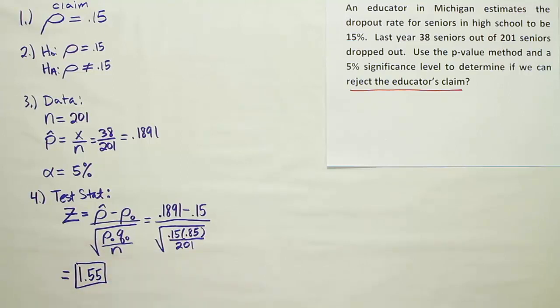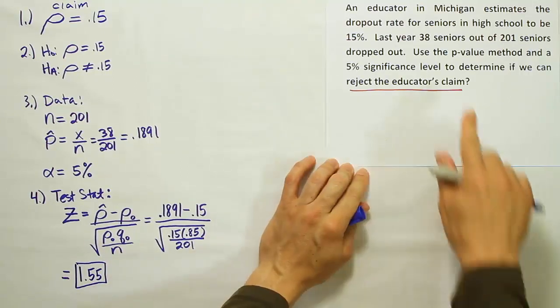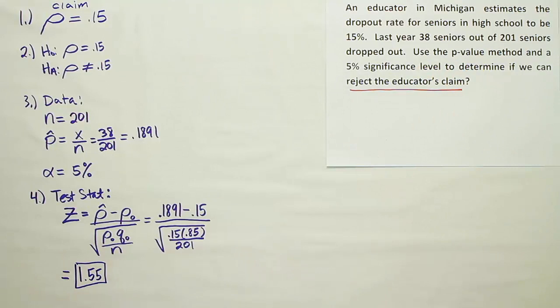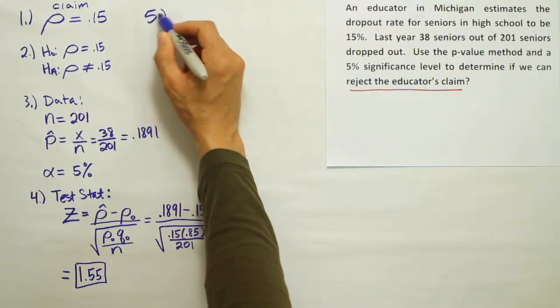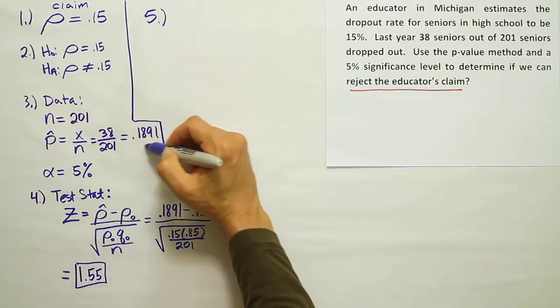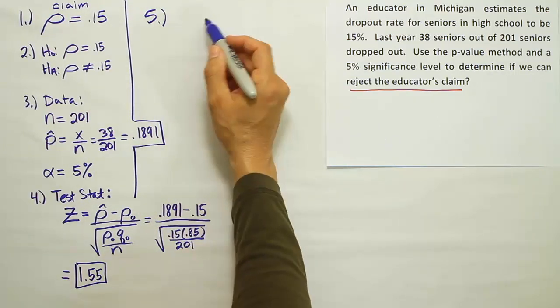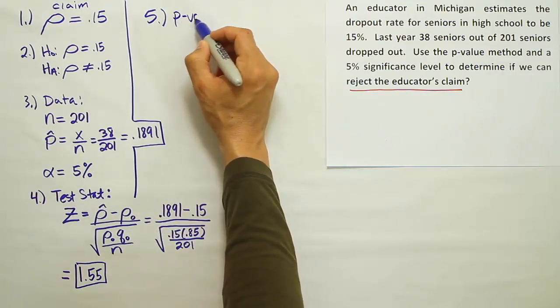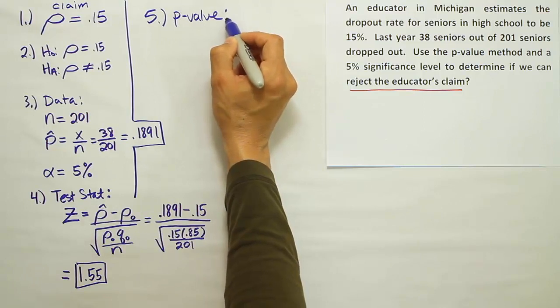Alright, now that we have our test stat, let's calculate the p-value like they asked us to. Use the p-value method, they said. So we're going to do the p-value in step 5. Okay, so in order to do the p-value method, we should draw a bell curve.